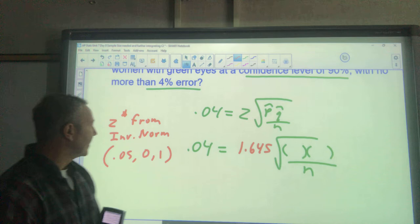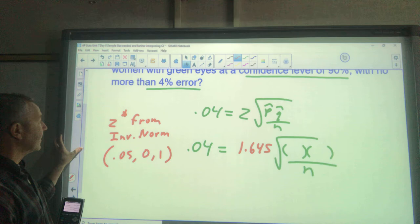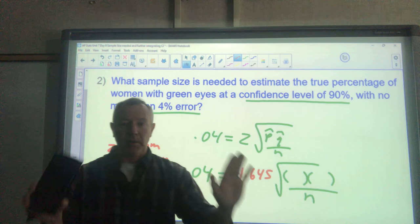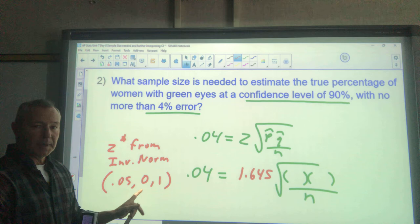It's the same as the last problem, and then I have my z-score for 4%. Notice that's from my inverse norm. It's a 90% level of confidence, meaning I have 90% there, I have 10% left over, 5% to be on either side.